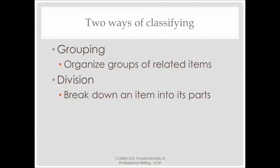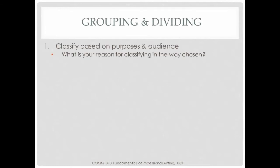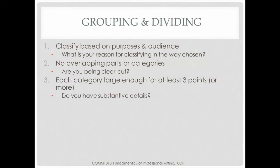Another method of organization is classification. In many essays, you will need to classify items, ideas, or facts. You may decide to group related items — called grouping — or you may need to break an item into component parts, which is dividing. When grouping and dividing, you must think carefully about your organization, classifying based on the purpose of your essay or your audience. Always be clear about your reason for choosing a particular approach, make sure things do not overlap, and ensure everything is clear and precise. When you group things together, make sure the categories are big enough to have at least three or more points for discussion. If your category is too narrow, you will not have enough substantive detail for a good paragraph and a good argument.